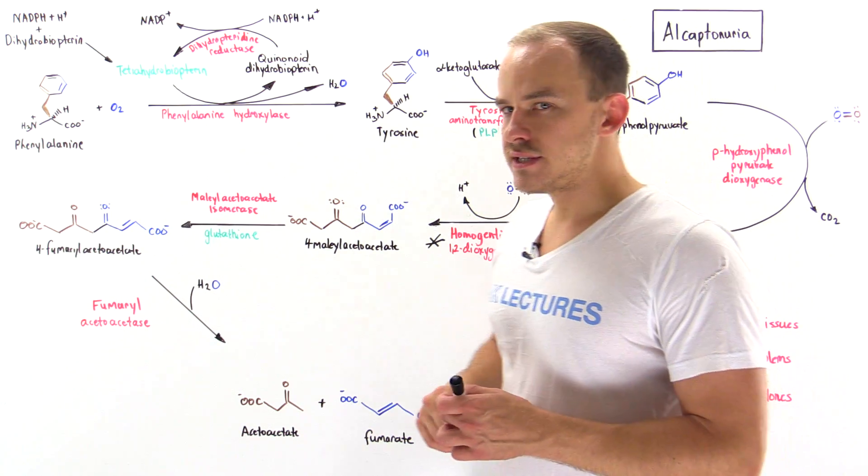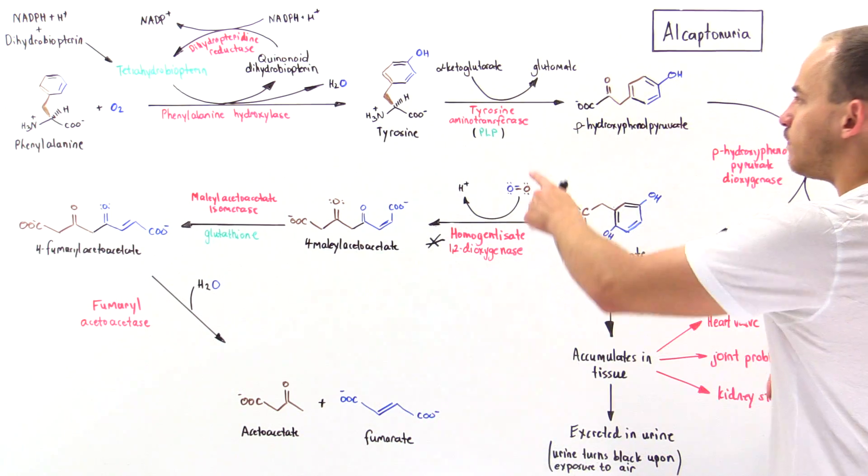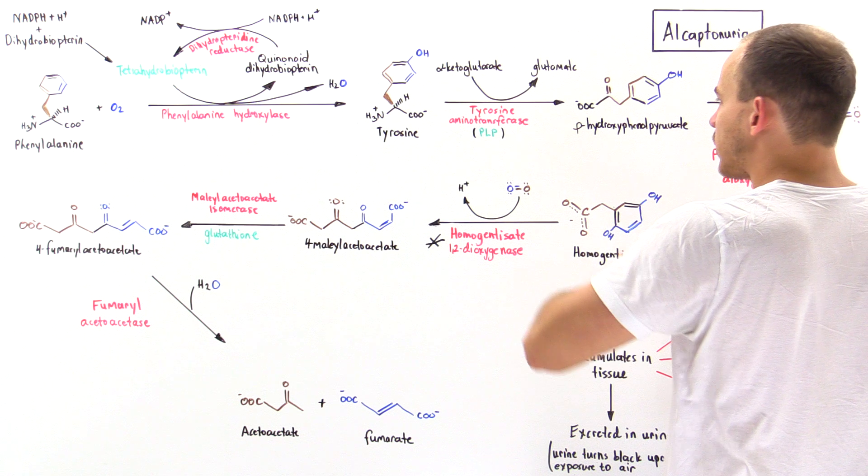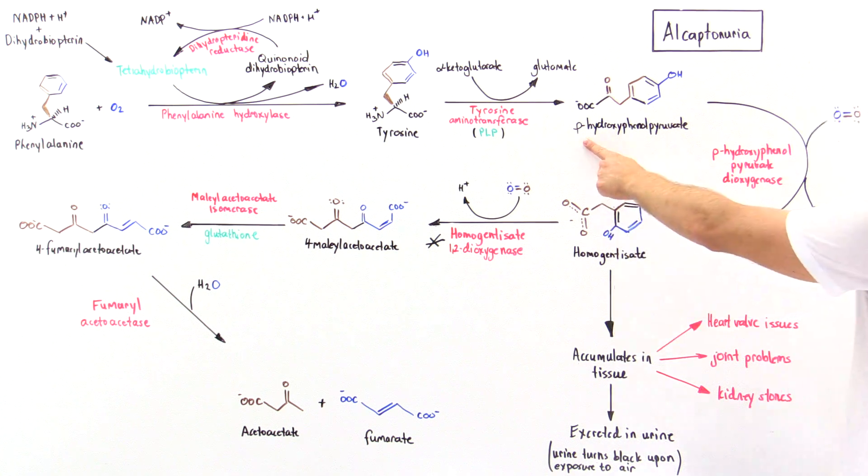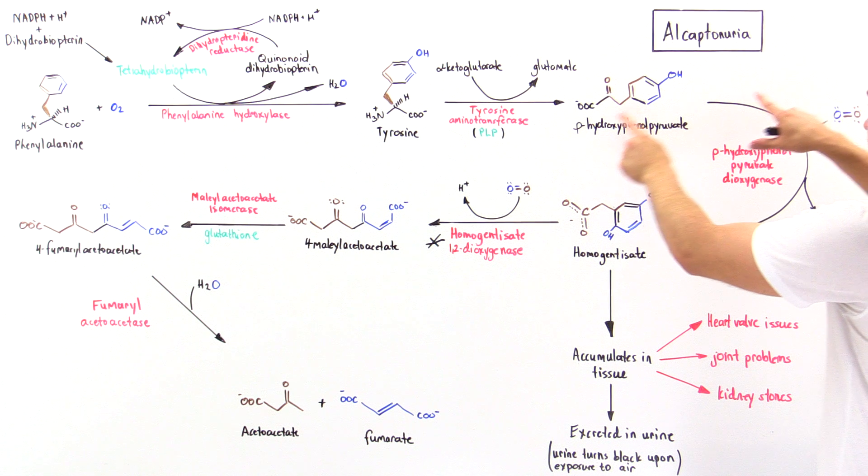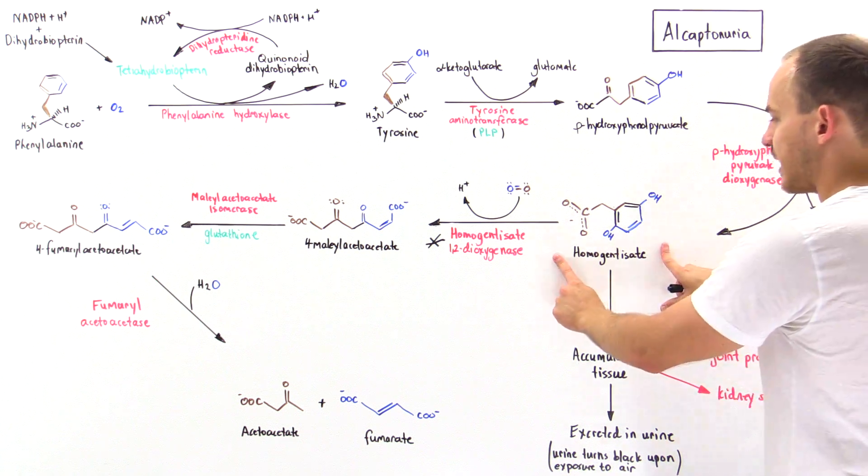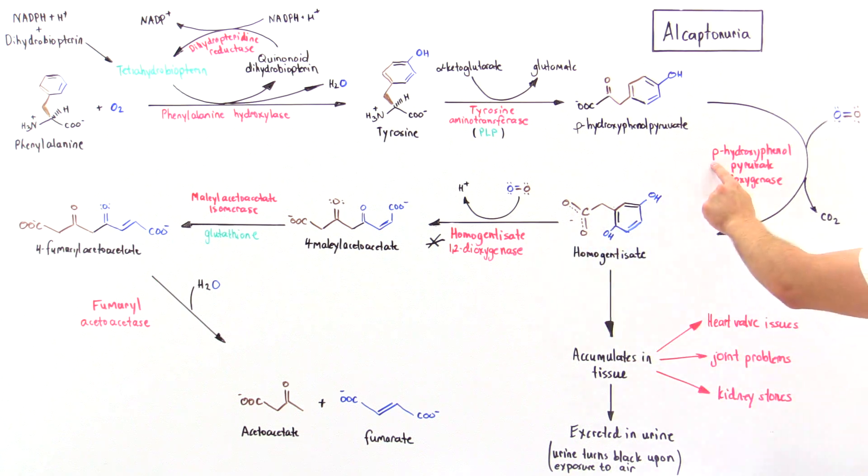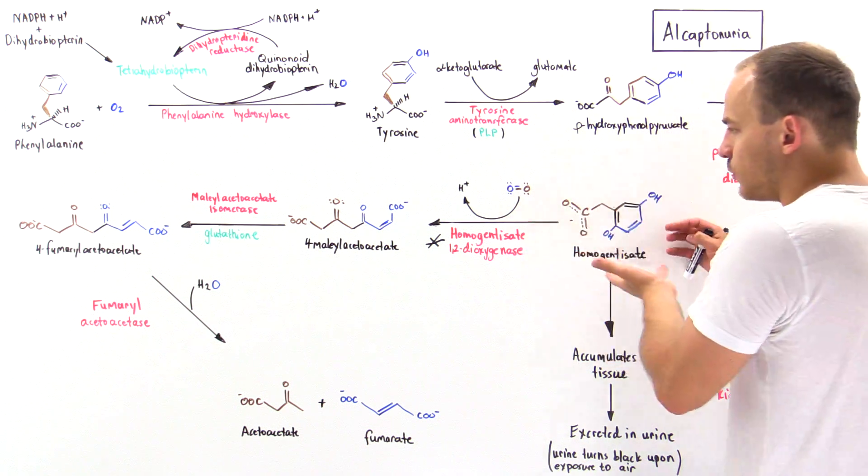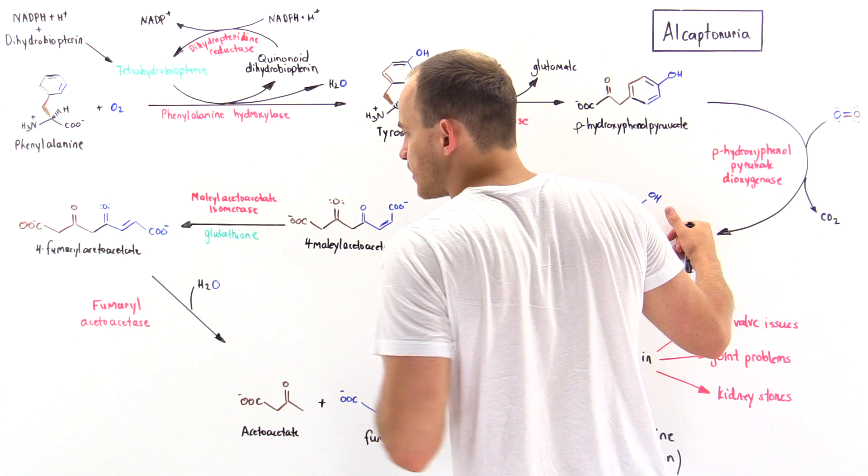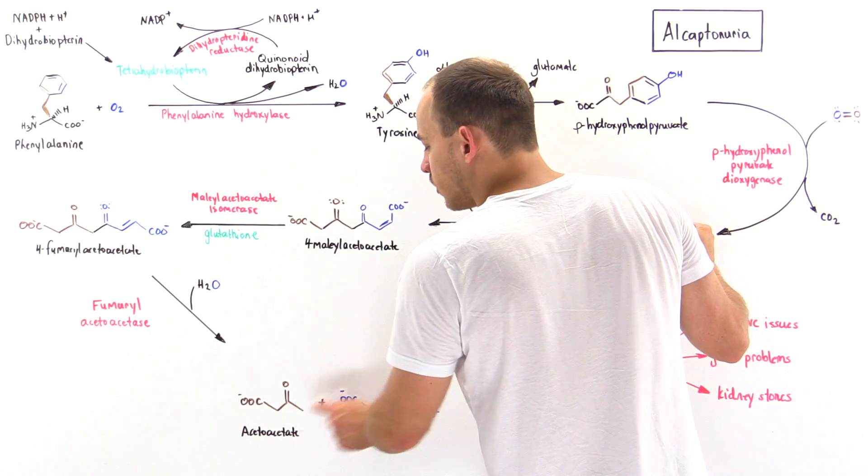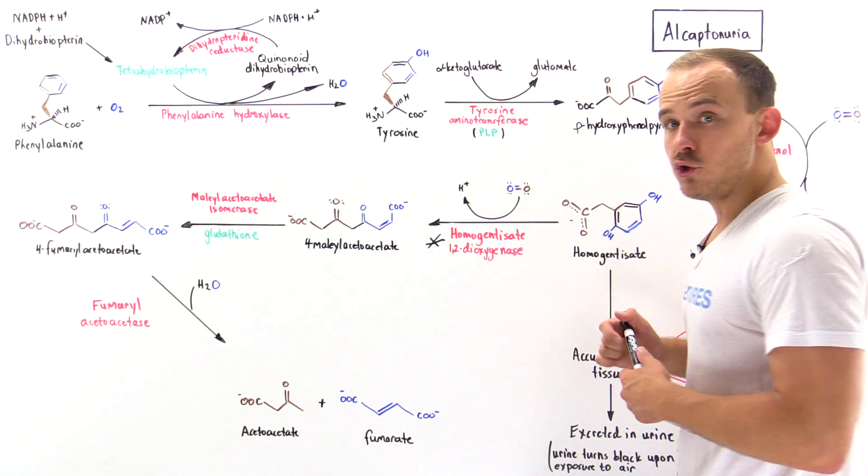Once we form tyrosine, it then reacts by the activity of tyrosine aminotransferase to form P-hydroxyphenylpyruvate. This intermediate is then transformed into homogentisate by the activity of the enzyme P-hydroxyphenylpyruvate dioxygenase. Then this molecule continues via these series of steps to ultimately form acetoacetate and fumarate.